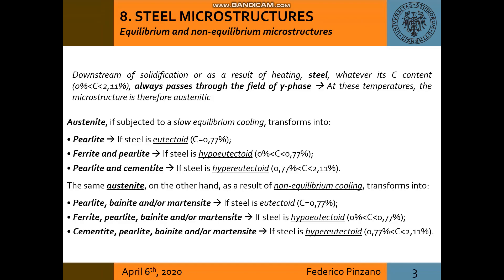In a generic steel there is always a temperature where the microstructure is austenitic. If subjected to a slow equilibrium cooling, austenite transforms into what already seen in previous slides. Instead, in case of non-equilibrium cooling, austenite transforms into pearlite, bainite and/or martensite if steel is eutectoid.